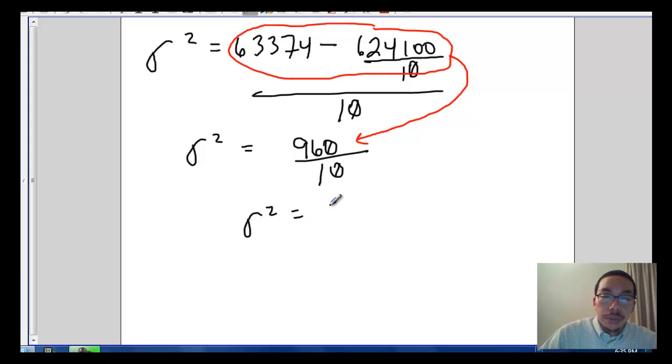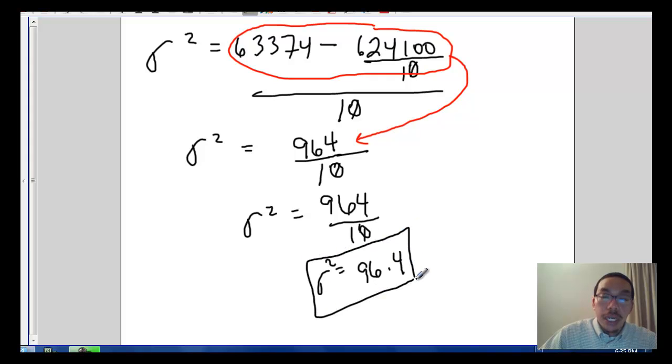So sigma squared equals 96. Actually, I'm sorry, this should be 964. If you punch that in, you'd have seen a different result than that 960, and you should have been saying, oh, there's an error there. So I caught my error. It's 964 when I punch all of that in. So 964 divided by 10 gives us sigma squared is 96.4, and that's the same result we got with the other formula.